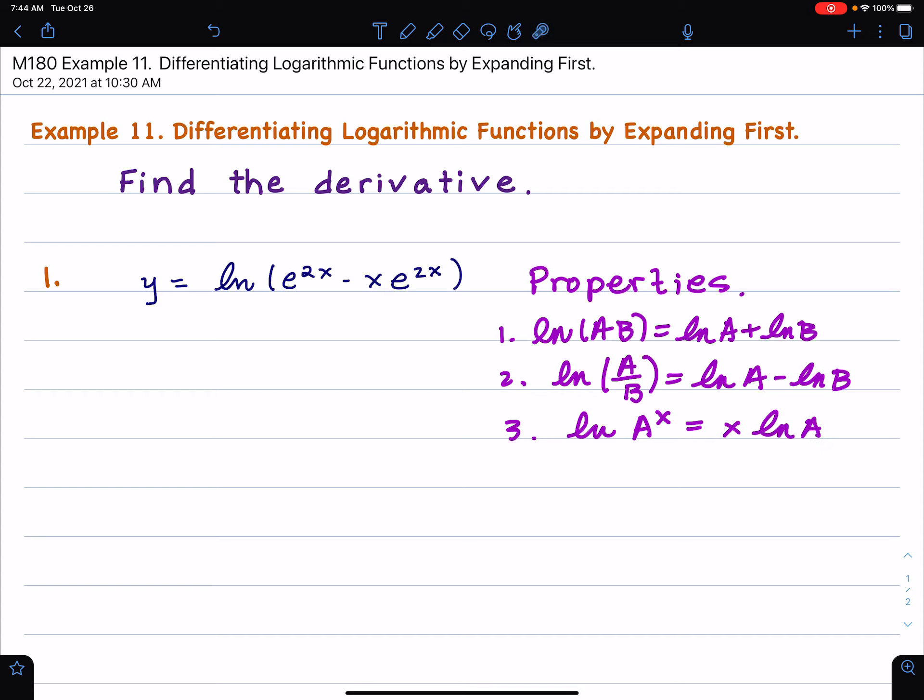And the third is that ln(A^x) = x ln A, so that this exponent here comes to the front. Now, when I say expand, what I mean is that if I have logarithm of a product, I mean, when I say expand, I mean that we can write that as two logarithms that are separated by addition, or if I have a division, a quotient, then I can write that as two logarithm expressions where I have a difference. And over here, if I have logarithm of an exponent, that exponent can be brought to the front.